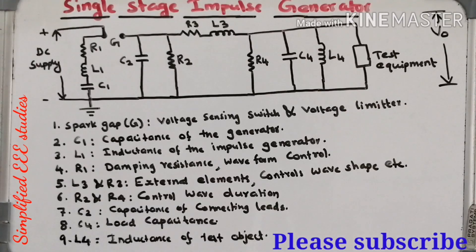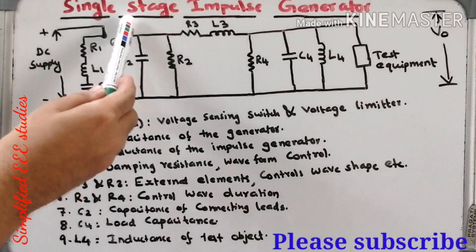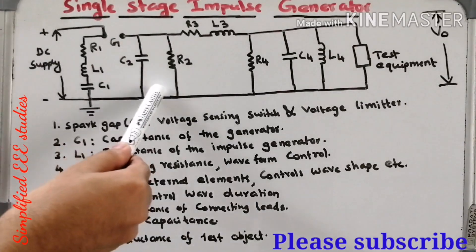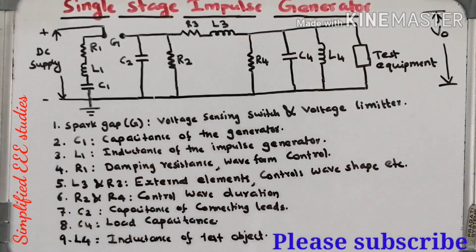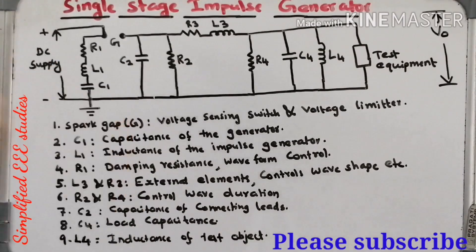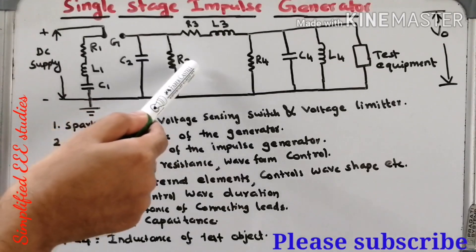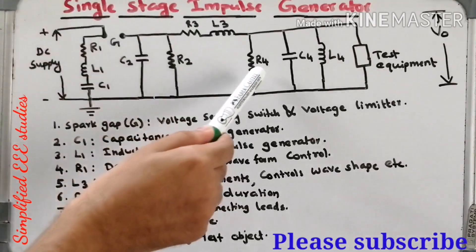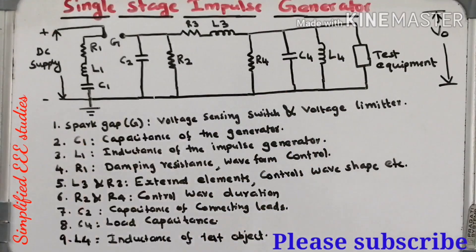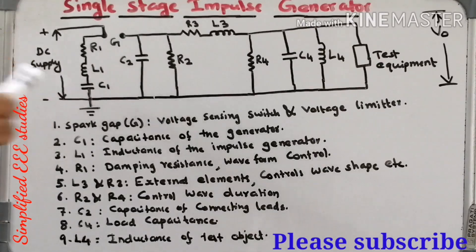Now let us see how it operates and what are the constructional features of single stage impulse generator. This is a circuit diagram of single stage impulse generator. We have different components like RLC elements R1, L1, C1, then capacitor C2, R2, R3, L3, R4, C4, L4, and we have one test object. This is the basic structure of single stage impulse generator. We also have the DC supply here.